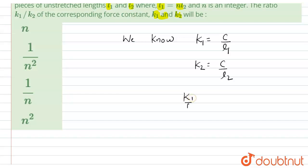Now the ratio of K1 and K2 will become equals to C upon L1 divided by C upon L2. It is given that L1 equals NL2.